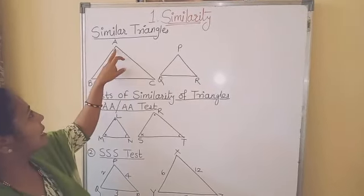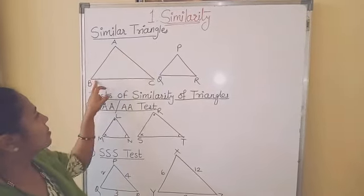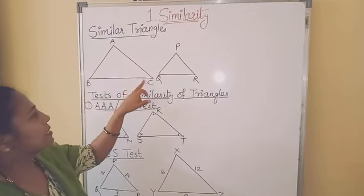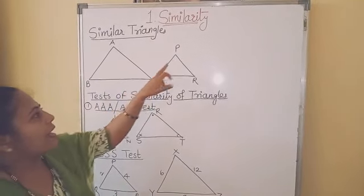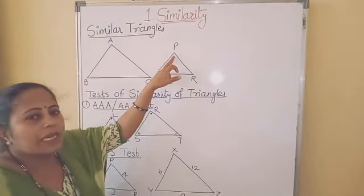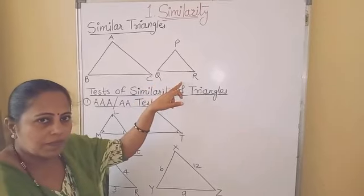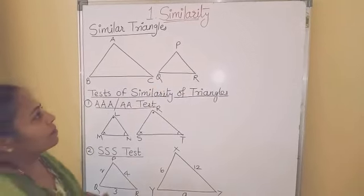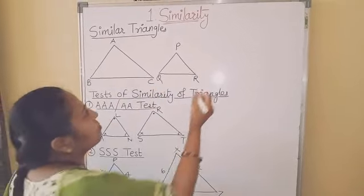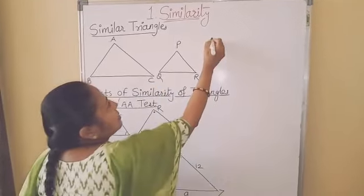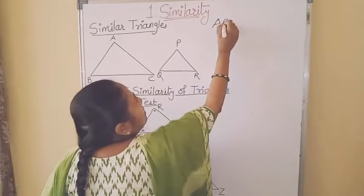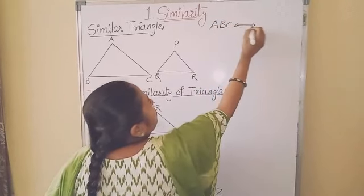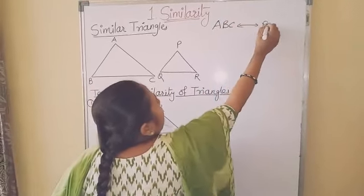Here you can see there are two triangles: triangle ABC and triangle PQR. They have a correspondence between vertices — A, B, C corresponds to P, Q, R.